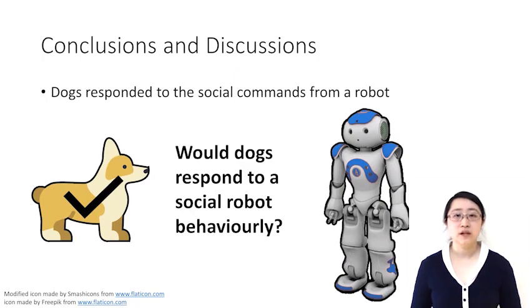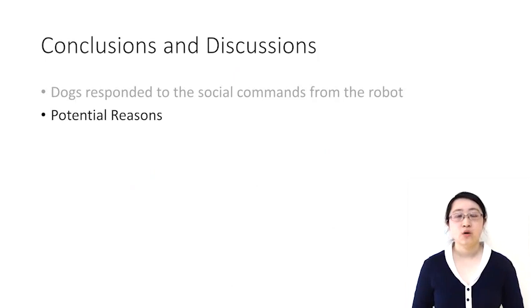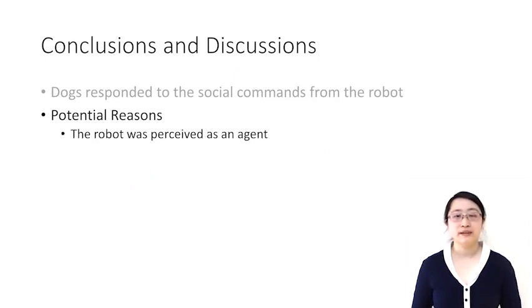Our results showed that the dogs follow the social commands given by the robot. We think there are three potential reasons. First, the dog may perceive the robot as an agent, and thus follow its commands.